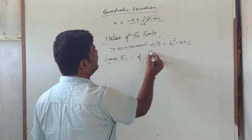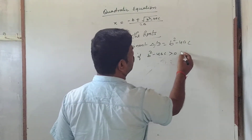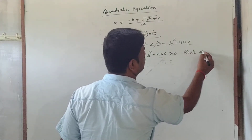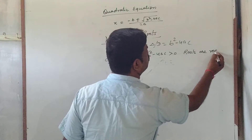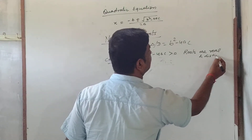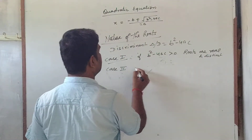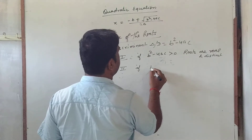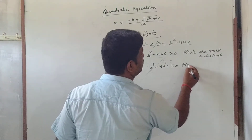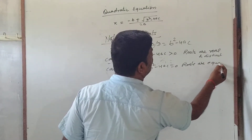Case 1: If b² - 4ac is greater than zero, then the roots are real and distinct. Case 2: If b² - 4ac is equal to zero, then the roots are equal and real.